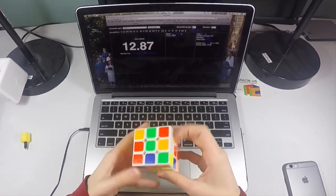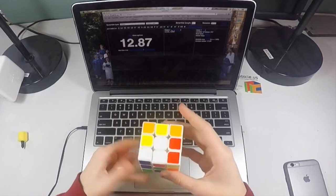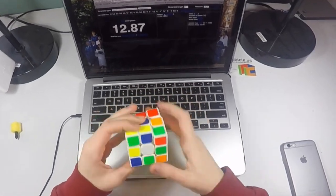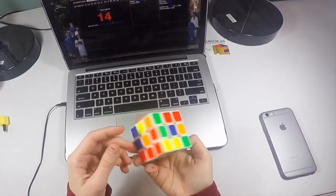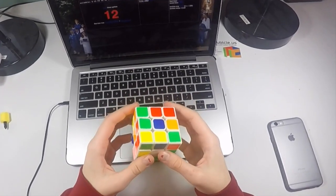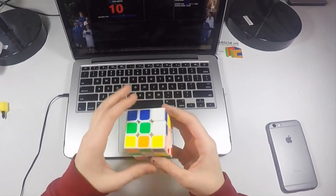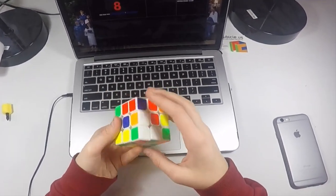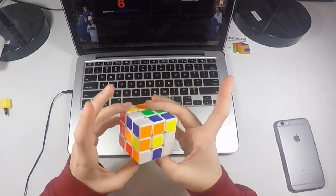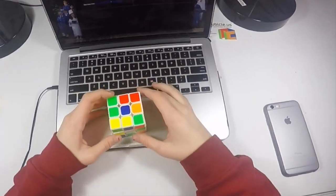So for you, you get to choose between a $25 thecubicle.us card or the Moyu Outwing 5x5. It's really up to you. Make sure you leave in the comments section which one you would like and then I will personal message you and give you further details on how to claim your prize.